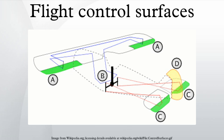The main control surfaces of a fixed-wing aircraft are attached to the airframe on hinges or tracks so they may move and thus deflect the airstream passing over them. This redirection of the airstream generates an unbalanced force to rotate the plane about the associated axis.